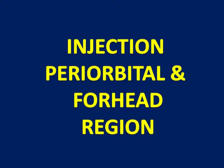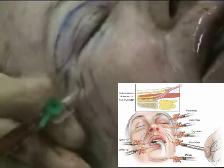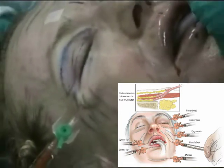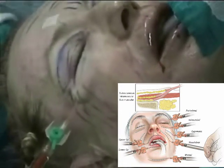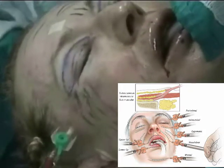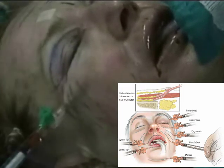Injection to the periorbital area and forehead. For injection to the infraorbital area, we use a 24 gauge needle, and very small amounts of macro fat graft are injected.